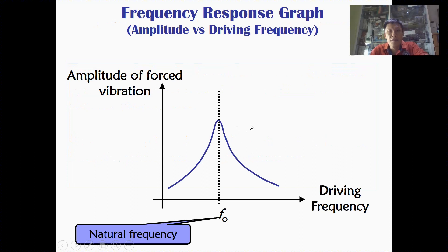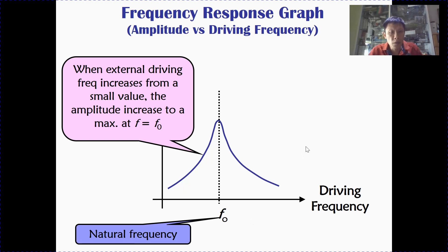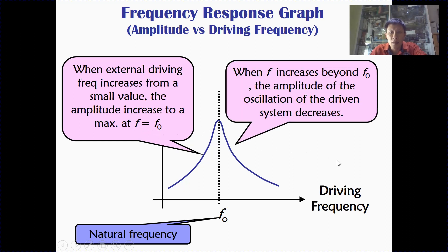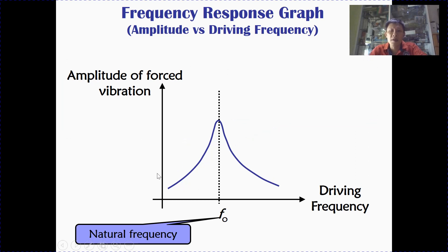Next, we're going to look at an important graph which illustrates resonance — the frequency response graph. A frequency response graph plots amplitude on the y-axis and the external driving frequency on the x-axis. F0 is the natural frequency of the driven system. As the external driving frequency increases from zero, the amplitude increases up to a maximum when the driving frequency equals the natural frequency — this is where resonance occurs. Beyond F0, the amplitude decreases.